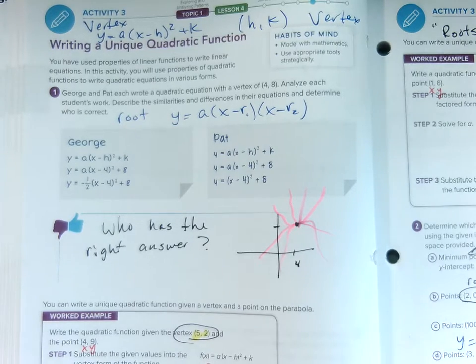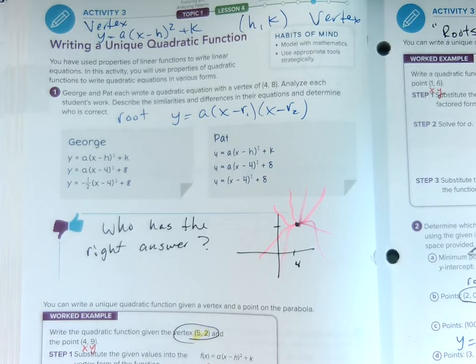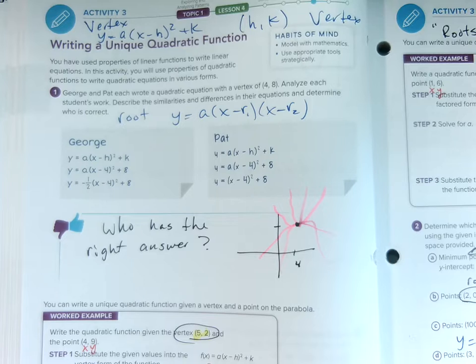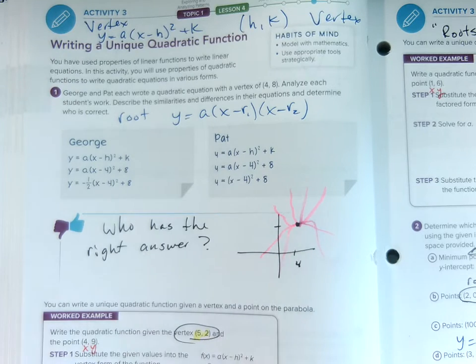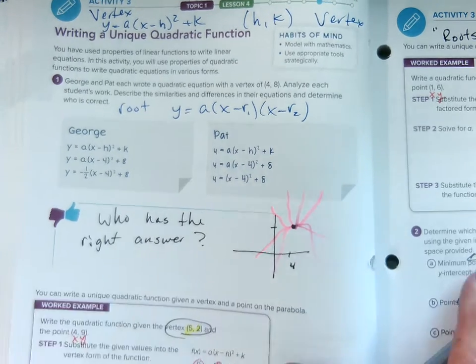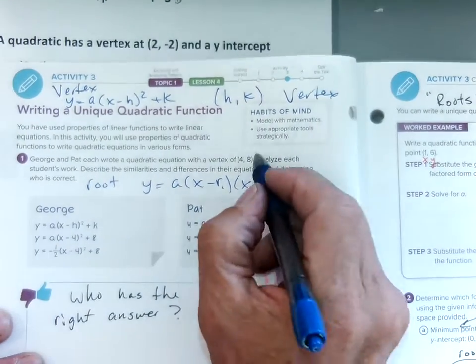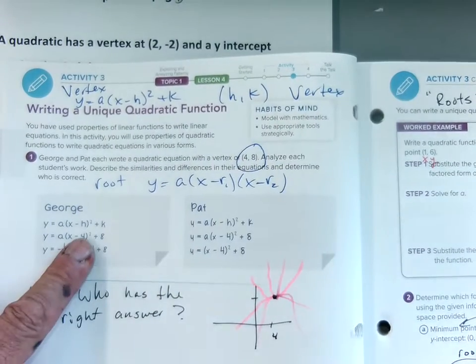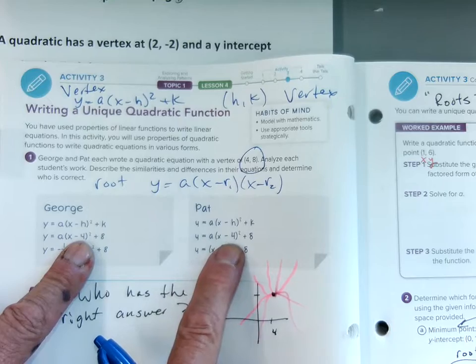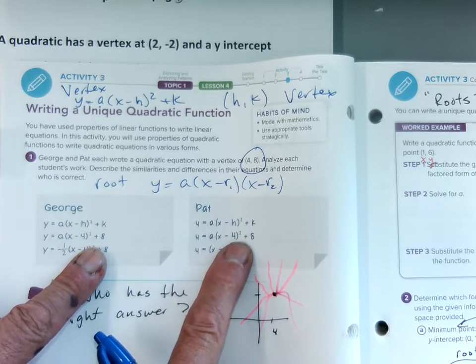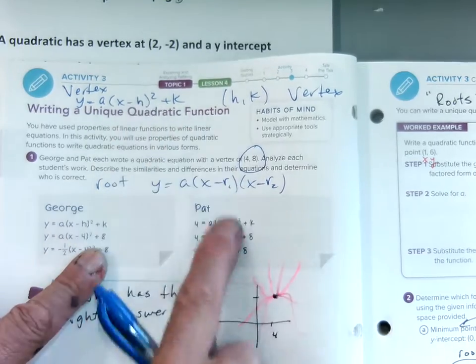So at minimum, if you have the vertex, at a minimum you need at least two points if you have a vertex. So George and Pat worked out their form. They had a vertex given to them of (4, 8). They both plugged the 4 and the 8 into vertex form. 4 and 8. There it is.